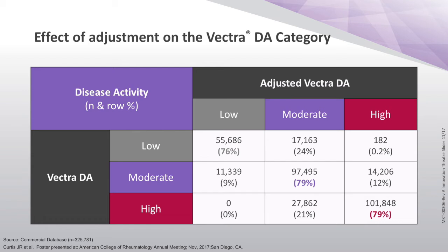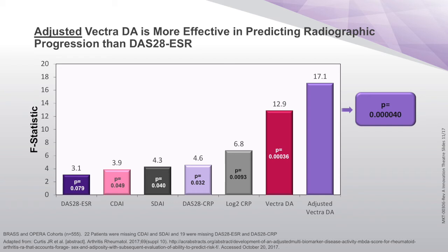Here is the Vectra DA in its traditional modes — low, moderate, and high — and this is the adjusted Vectra DA. If you focus on the diagonal: if you were low to begin with, 73% of them stay low; if you were moderate to begin with, 78% of those stay moderate; and if you were in the high category, 87% of them stay high. There is a slight adjustment of 12% to one category, and a larger group going from low to moderate. Nobody jumps two categories. These are adjustments that I think are meaningful, and I believe the end product will be a more precise test.